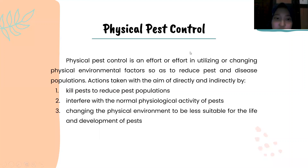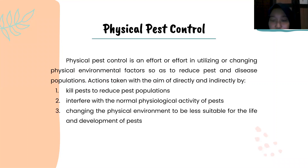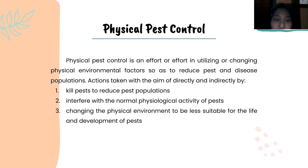Physical test control is an effort in utilizing or changing physical and environmental factors so as to reduce pest and disease population. Actions are taken with the aim of directly and indirectly: first, to kill pests and reduce pest population; second, to interfere with the normal physiological activity of pests; and last, to change the physical environment to be less suitable for the life and development of pests.